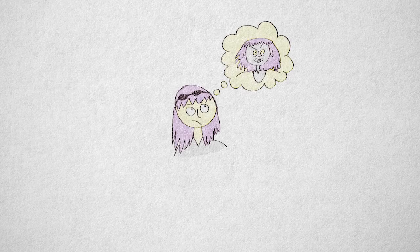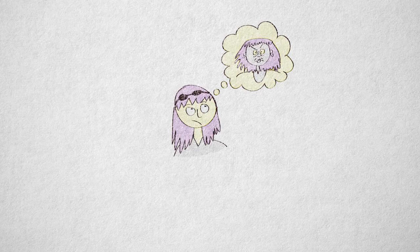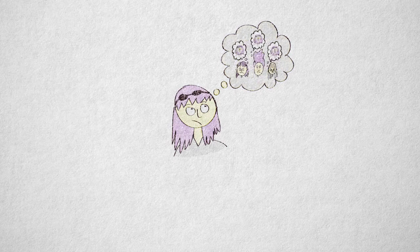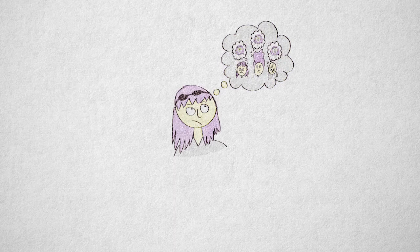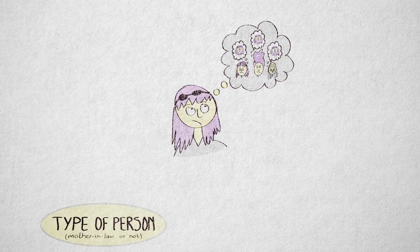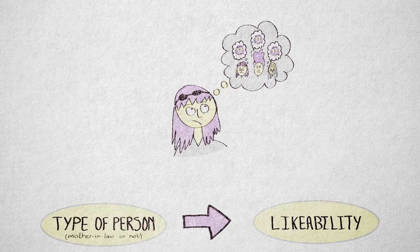Let's take as an example a personal observation of mine. I have a horrible mother-in-law. I've talked to some friends, and they also complain about their mother-in-law. This looks like an interesting pattern - a pattern between type of person and likability.